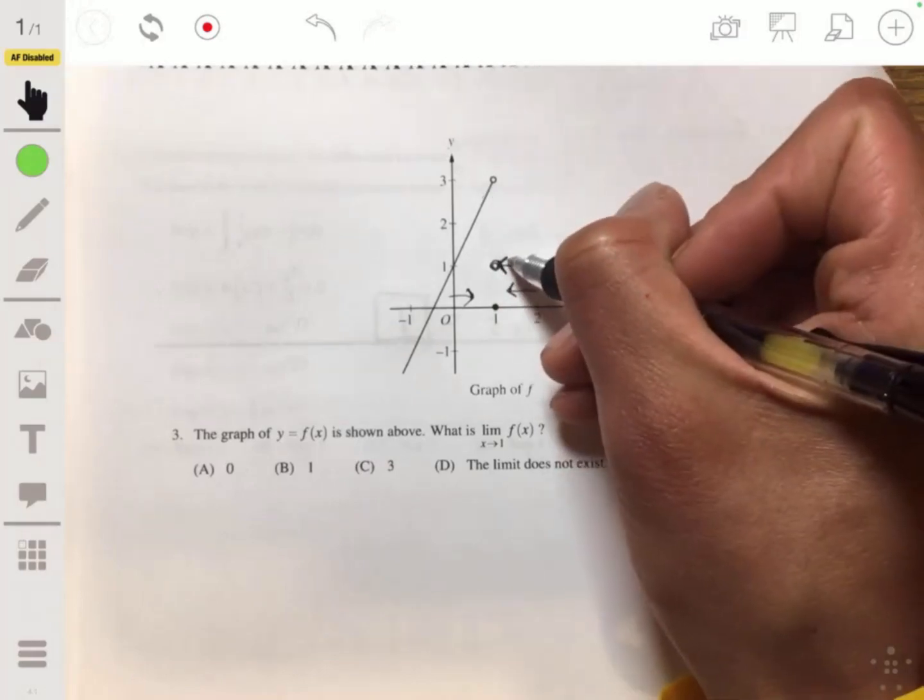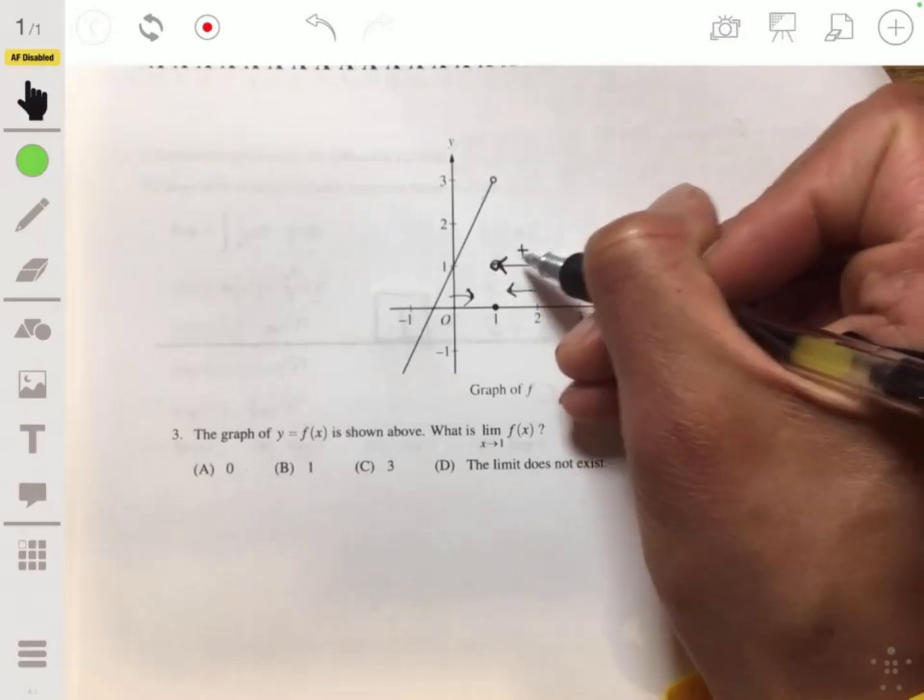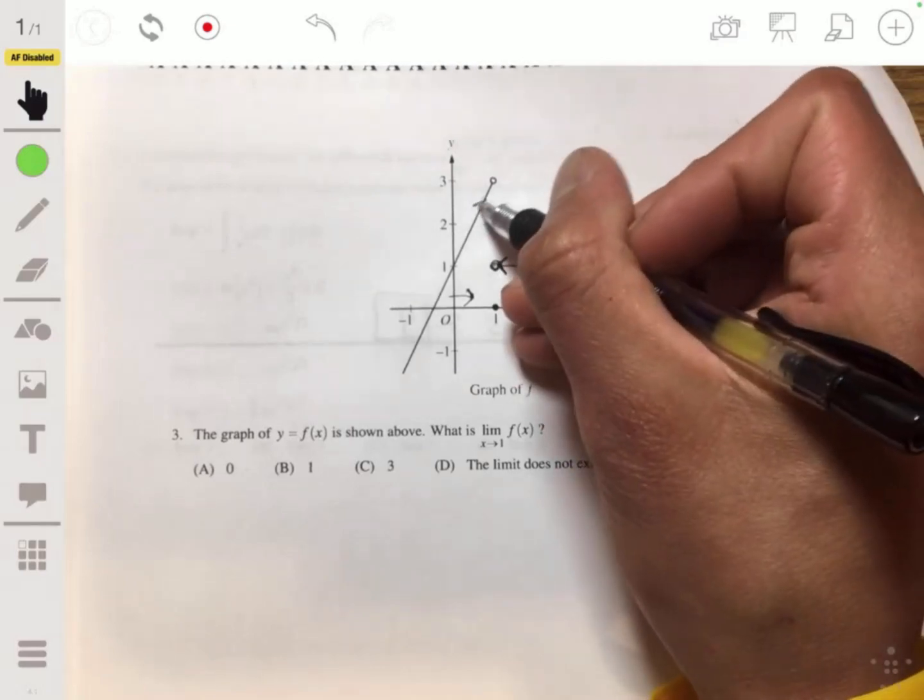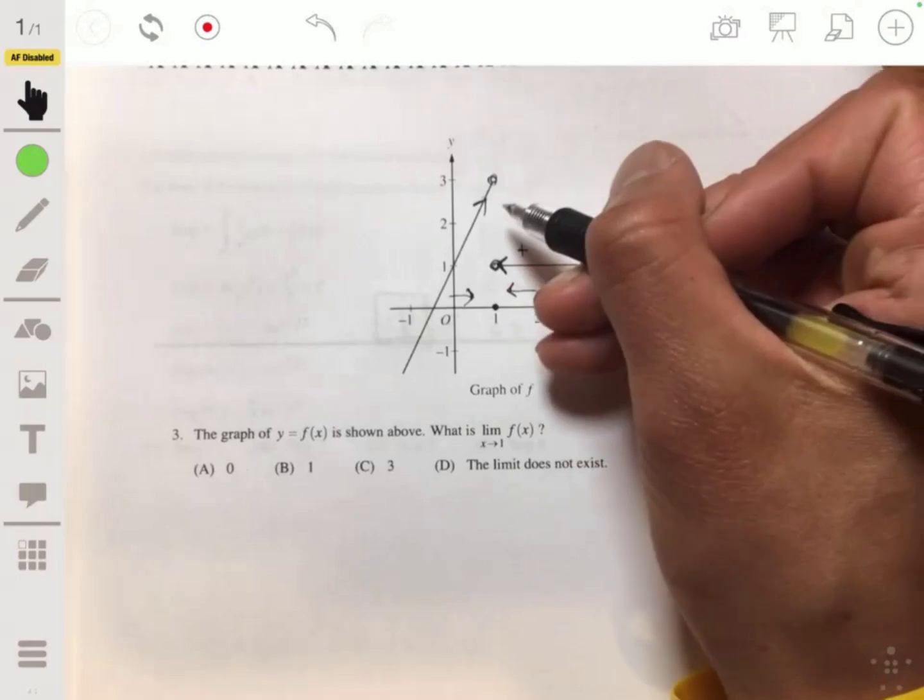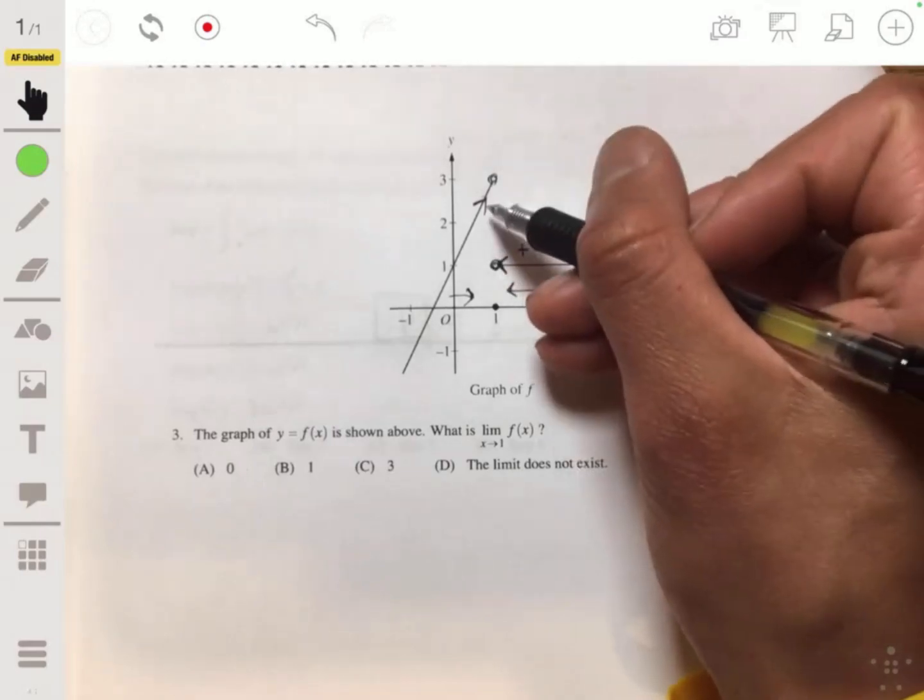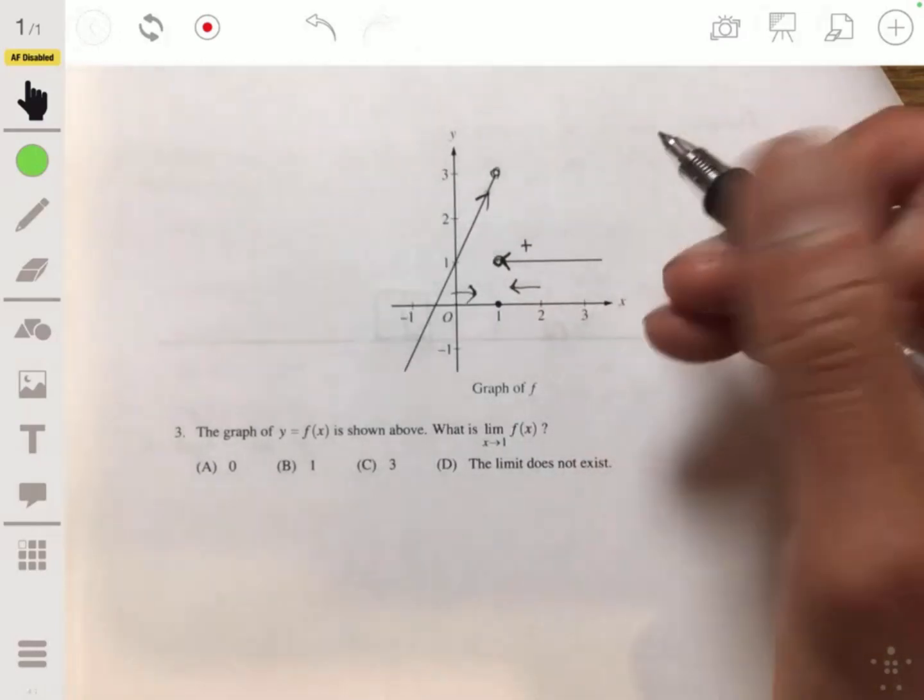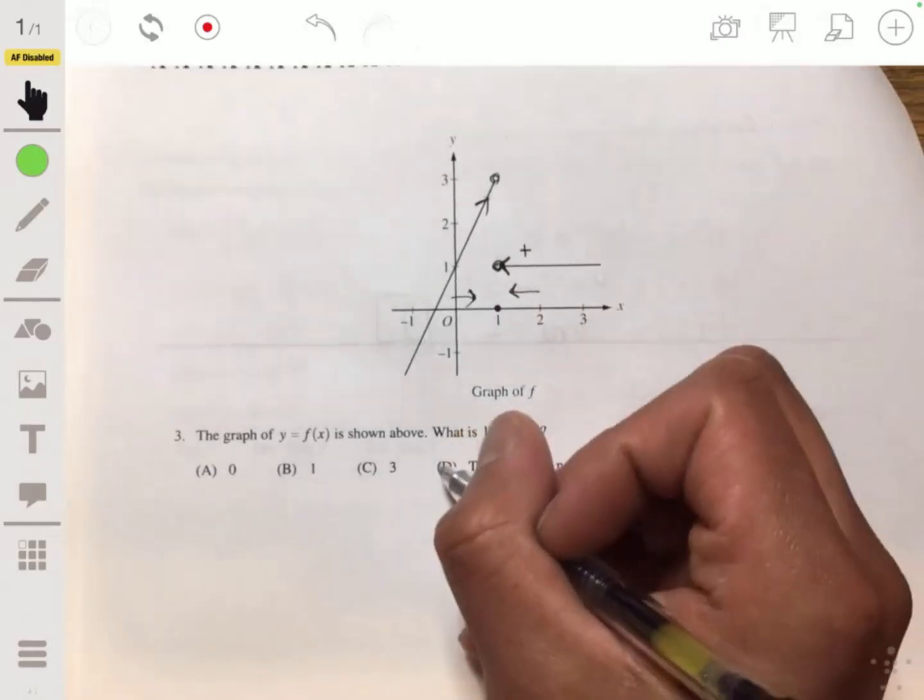I'm sorry, from the right, we're approaching this value here, or from the positive side we're approaching 1. But from the negative side, we're approaching 3. So since these two values are not equal, the limit's not going to exist.